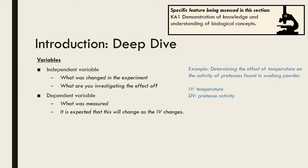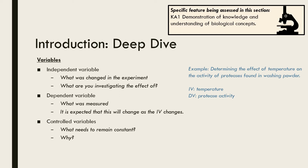The other type of variable that you need to identify are the controlled variables. These are factors that need to remain constant as they may also influence the dependent variable. Include a brief explanation of how they will be controlled and why they must be kept constant — in other words, how may it influence the results if not controlled?